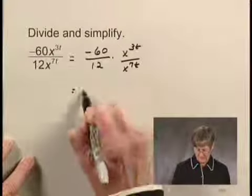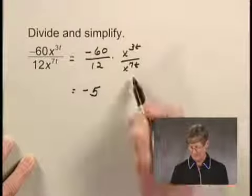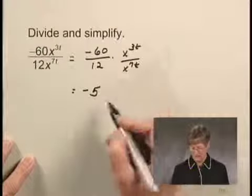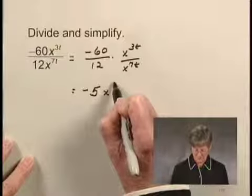Negative 60 divided by 12 is negative 5. And when I do this division with the variable factors, I subtract exponents. I subtract the exponent in the denominator from the exponent in the numerator.